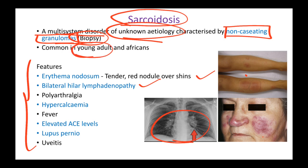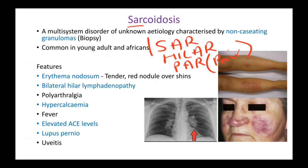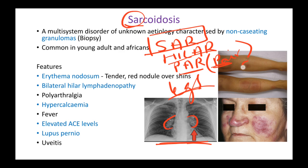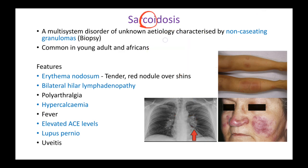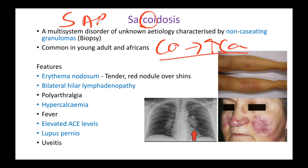Sarcoidosis is most commonly seen in young adults, especially Africans. Here is a mnemonic to remember the clinical features. Take the first three letters of the word 'SAR'. SAR rhymes with 'hilar', so there will be bilateral hilar lymphadenopathy, as seen on this chest X-ray. 'PAR' - or 'pair' meaning legs in Hindi - refers to erythema nodosum: tender nodules over the shins, below the knees. The next part, 'CO', stands for elevated calcium - hypercalcemia.